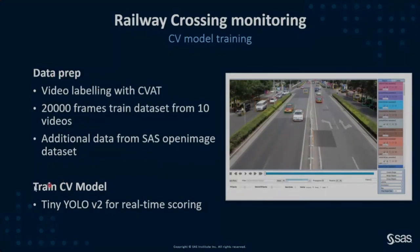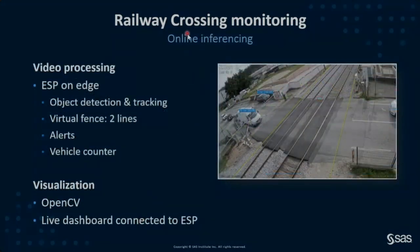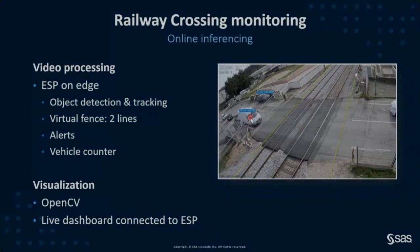We trained a Tiny YOLO v2 model for real-time scoring. It's a deep learning model, but the compute time needed for inference is very low, making it suitable for real-time scoring. Daniele's part covers the video processing: using ESP we take our model, detect objects, and track them frame by frame — we can follow a car across frames and know it's the same object we saw before.